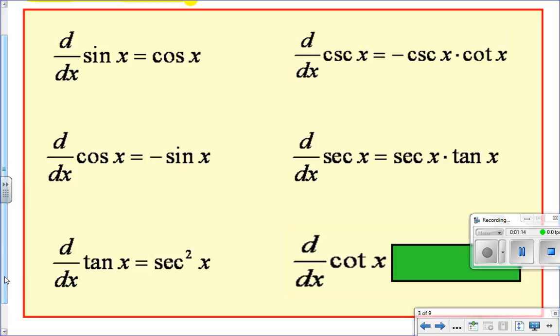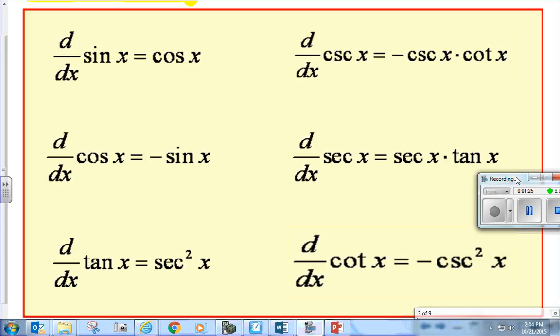The frustrated ones always do it. Alright, last one, cotangent. That's negative cosecant squared. So look at, if there's a cosecant in the derivative, it's a negative. If there's a secant in the derivative, it's positive.